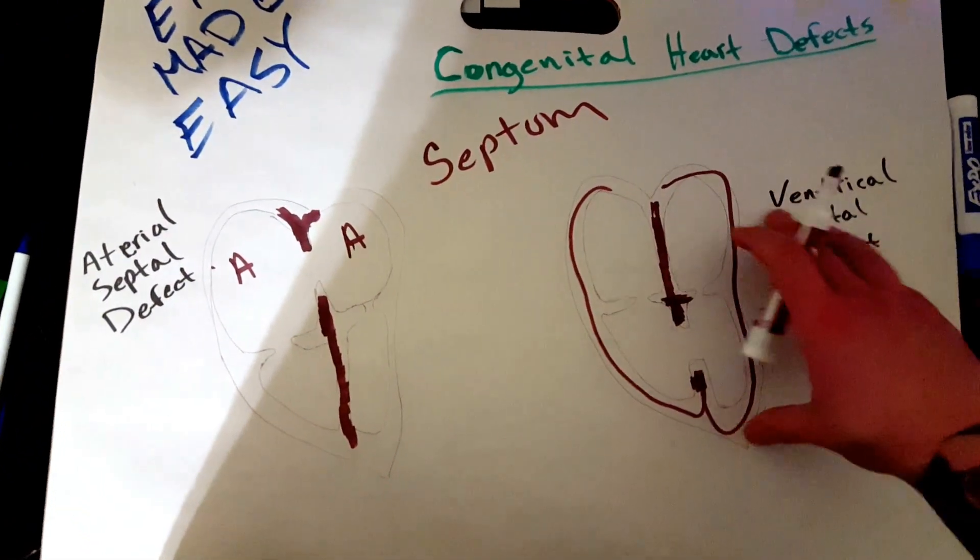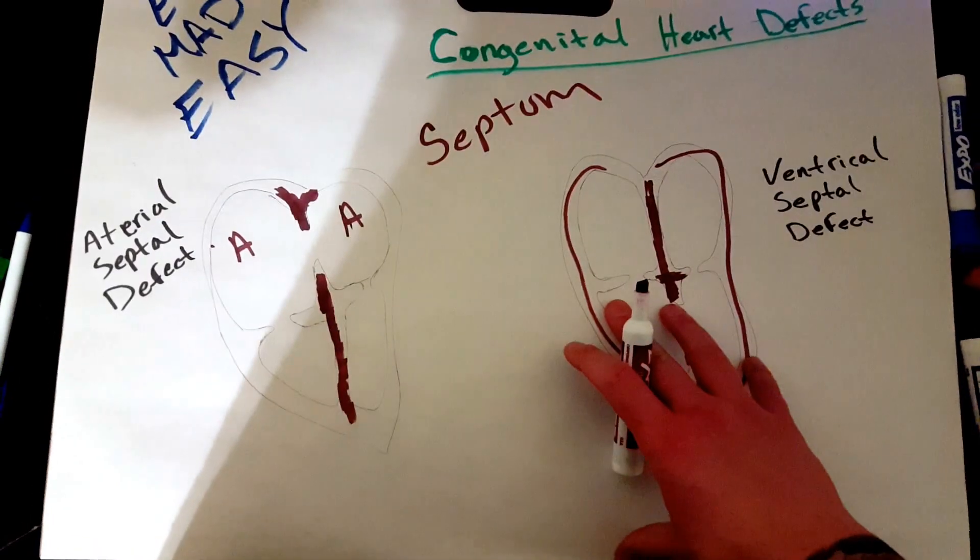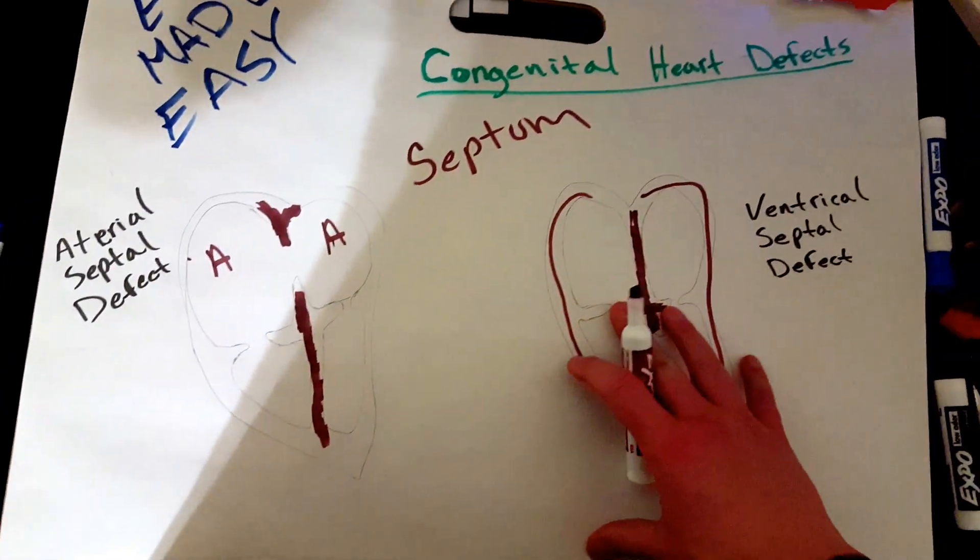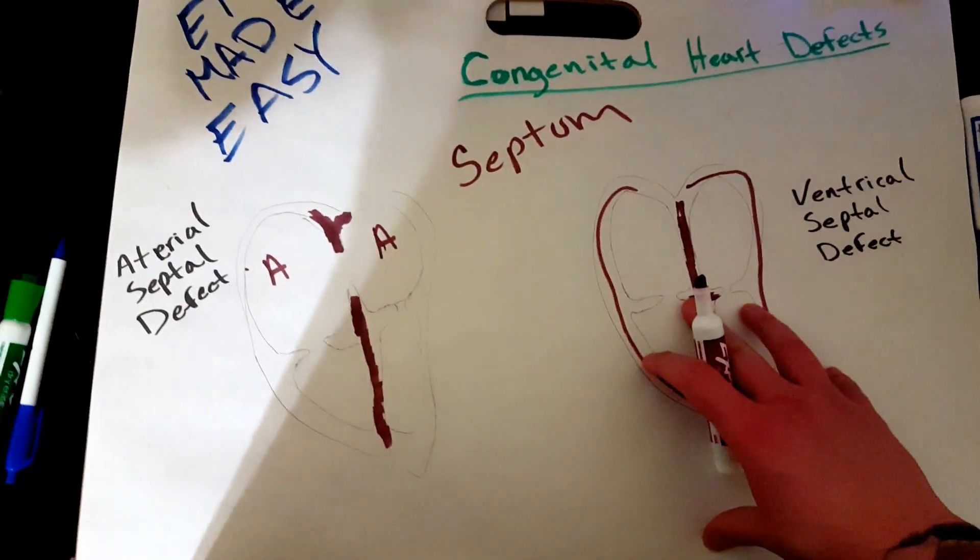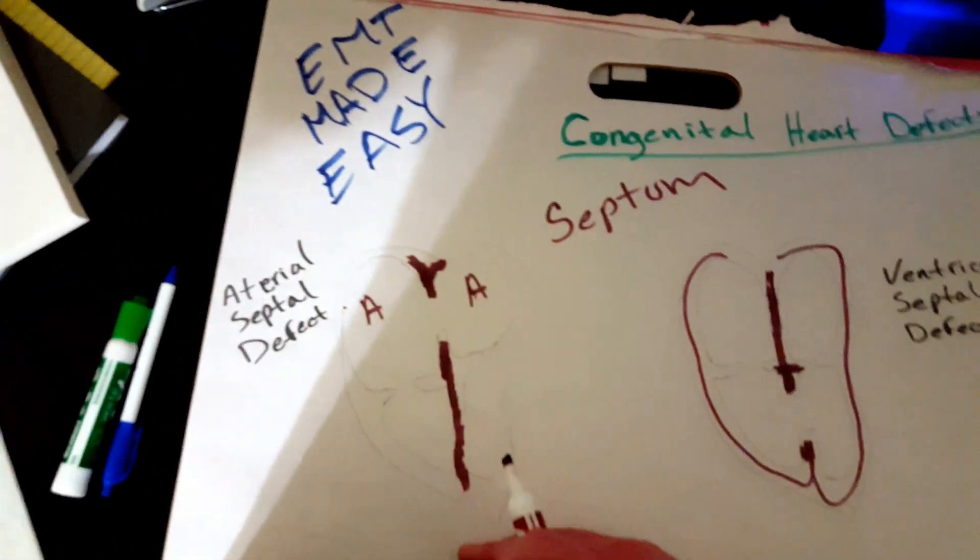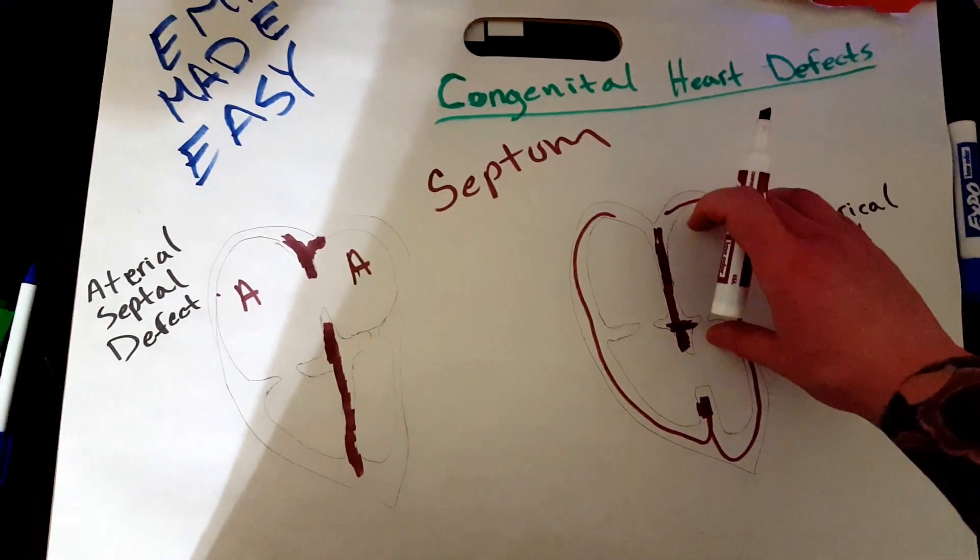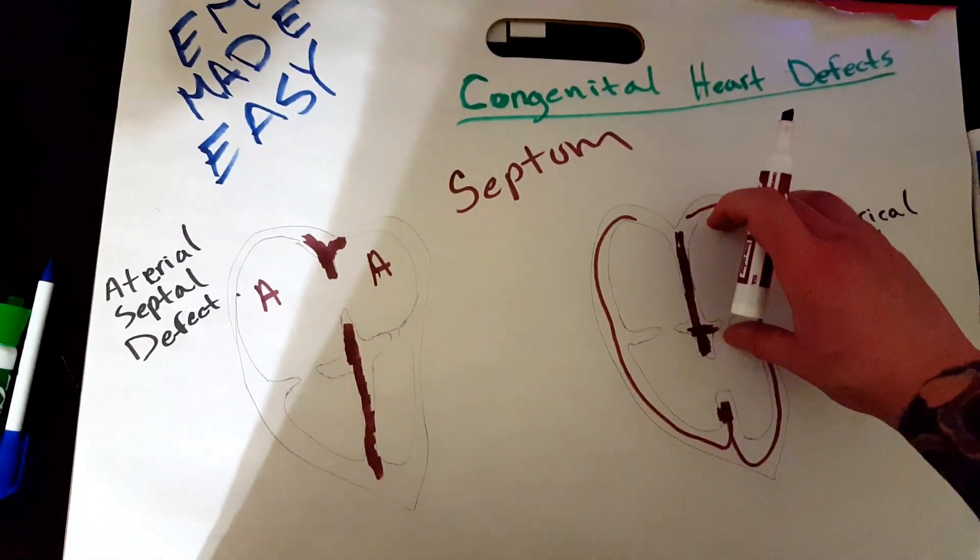That way, at least you know what's up. When you see it in a test, when you hear about it, you can have an intelligent conversation about it. Because the more you know, the better anyways. So, I'm going to start from top to bottom. Now, depending on where the defect is, that's what it's going to be named after. So, for example,